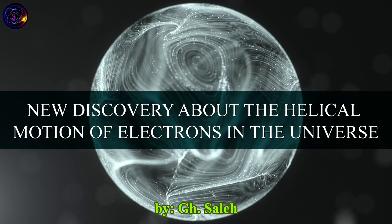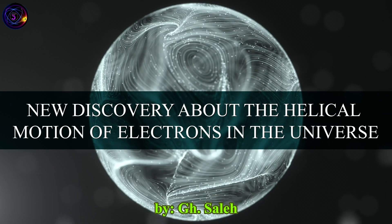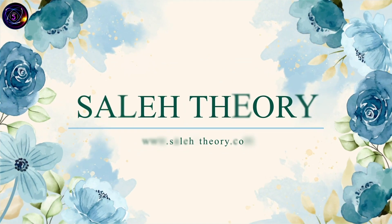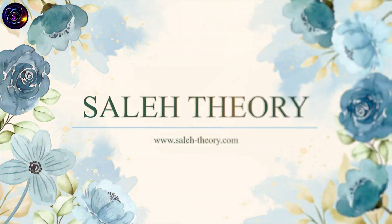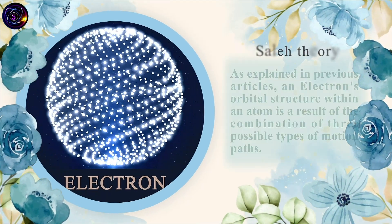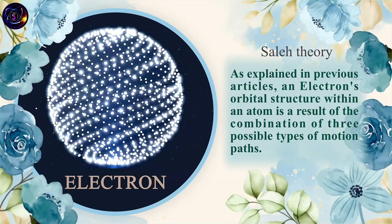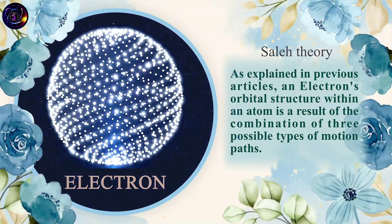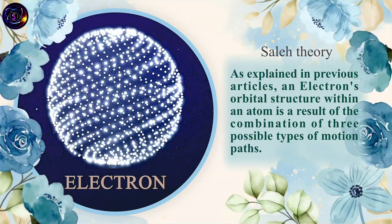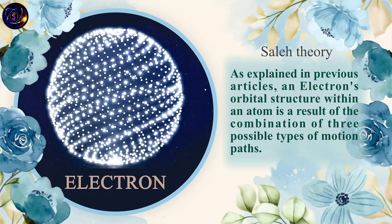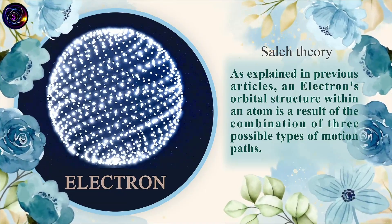New discovery about the helical motion of electrons in the Universe. As explained in previous articles, an electron's orbital structure within an atom is a result of the combination of three possible types of motion paths.